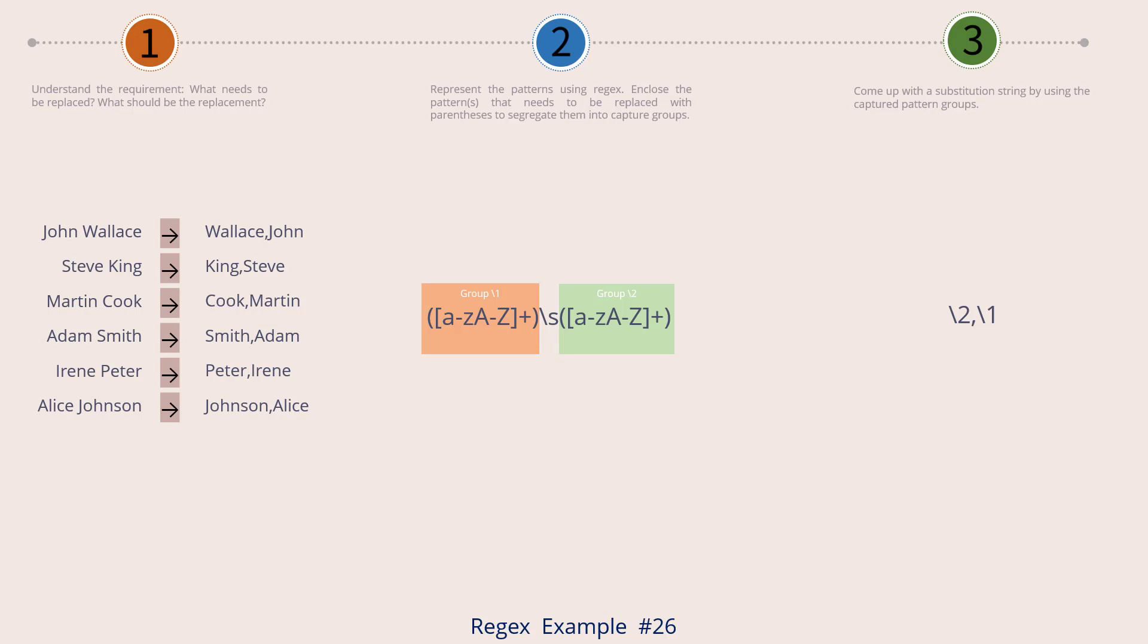So our solution for example number 26 is a set of two regex patterns. The first pattern is what we came up with in step 2. The second pattern is our substitution pattern, which we came up with in step 3. Let's try this out now.